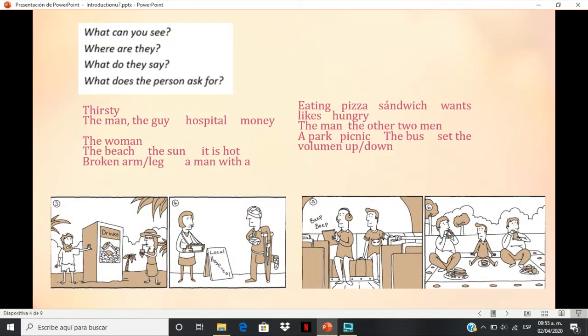Now here you are more pictures. We are going to do the same dynamic. What can you see in the pictures? Where are they? What do they say? What does the person ask for? What is the situation? What is the problem? So, here it is some vocabulary, maybe, that you can use to make your description.